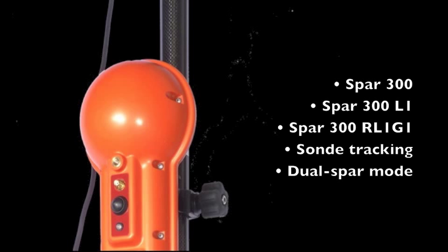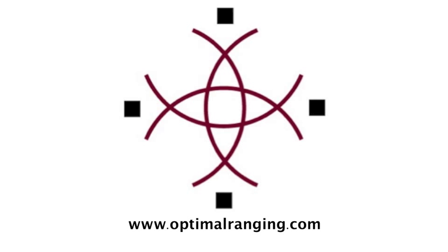Optimal Ranging designs and produces three versions of the SPAR, including sawn tracking for non-metallic utility pipes and network RTK for dual SPAR measurements of deeper utilities. Visit OptimalRanging.com or contact a local Trimble dealer to see what we have to offer.